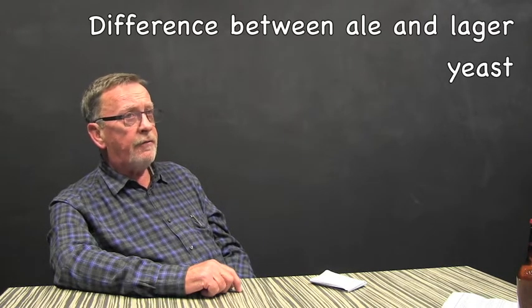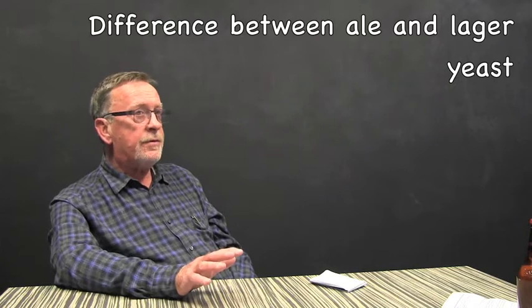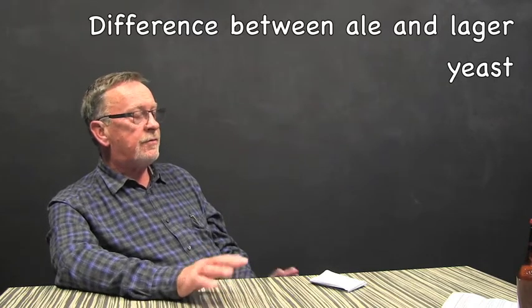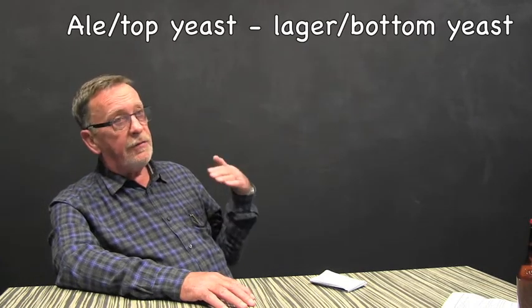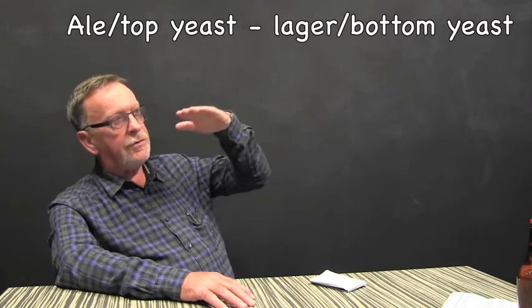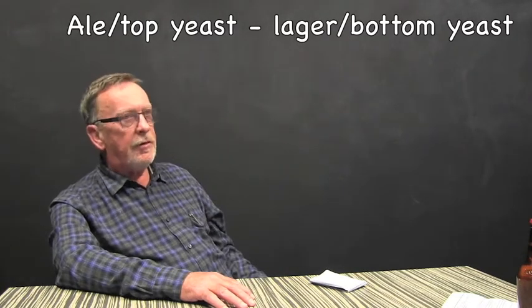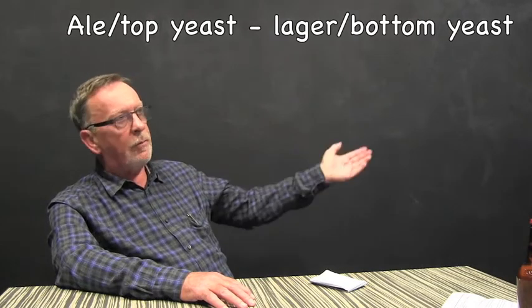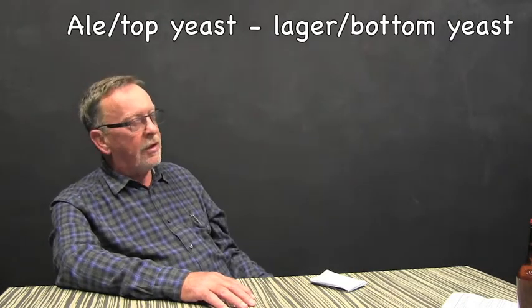For the drinking punters out there, there is a difference between an ale yeast and a lager yeast. The major difference between ale and lager is that the ale is fermented with a top yeast, which means at the end of fermentation the yeast flocculates and floats to the surface. Traditionally it's skimmed off the top, much like you'd skim a custard.